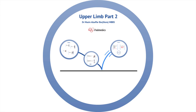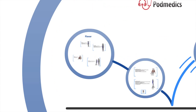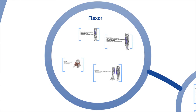Hello, my name is Mazan Asfar and welcome to the second part of our upper limb anatomy series. Today we're going to concentrate on the muscles of the forearm, and I'm going to separate them into the flexor and extensor compartments. Let's start with the flexor compartment.